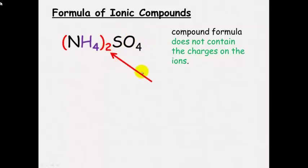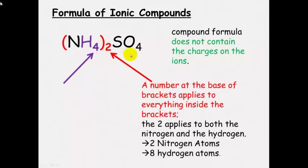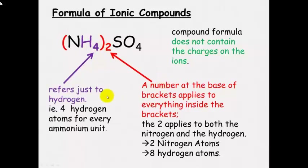The little subscript numbers in a formula are important. The number outside the brackets applies to everything inside the brackets — everything gets multiplied by that number. For example, in (NH₄)₂, the 2 applies to both the nitrogen and the hydrogen, giving a total of 2 nitrogen and 2 times 4 equals 8 hydrogen atoms. The 4 refers only to the hydrogen within each ammonium unit — 4 hydrogen atoms per ammonium. If you understand how to write ionic compounds, you can stop here; otherwise, please continue watching.